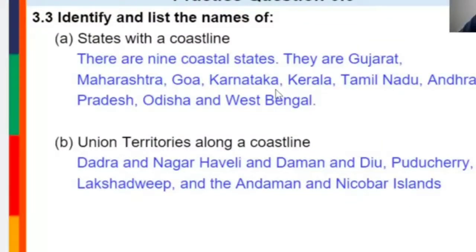The next question: states with a coastline and the union territories along the coastline. In the map, you can see there are many states that have a coastline. What are the union territories along the coastline?